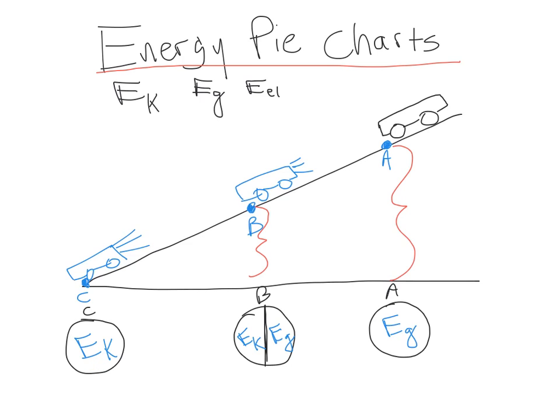So I hope that makes sense. The assignment you're going to work on has several scenarios like this where you're going to have to think in terms of kinetic, gravitational, and elastic, and think about what the object may have and how the energy may change from one kind to another as the scenarios depict. That's about all I have to say about energy pie charts. Hopefully that's enough to get you started.